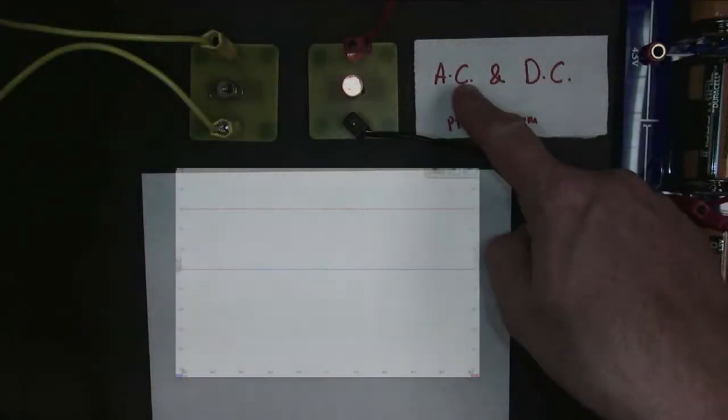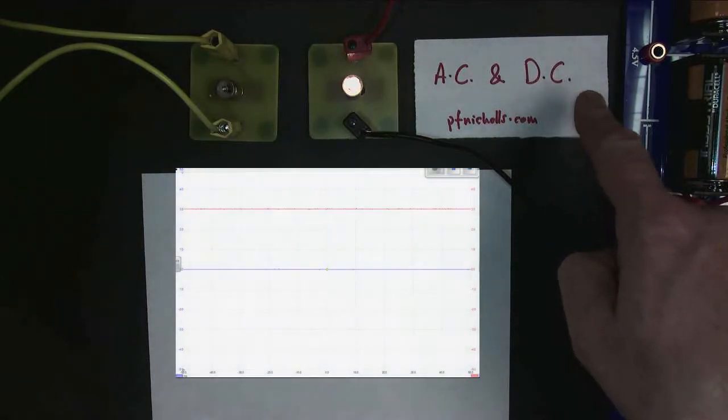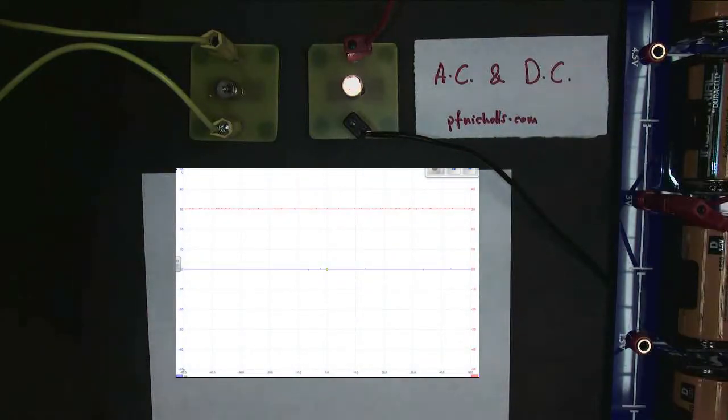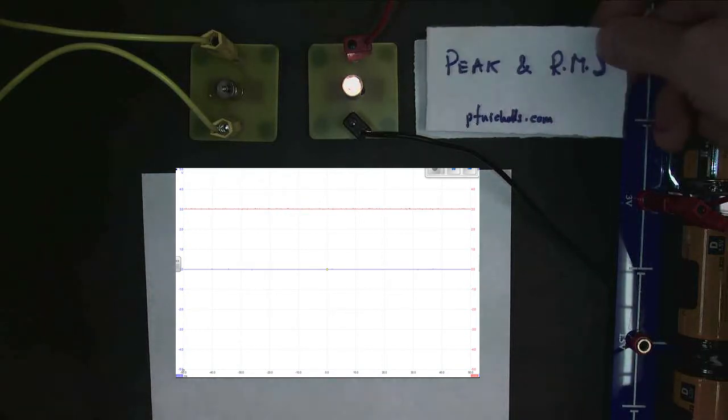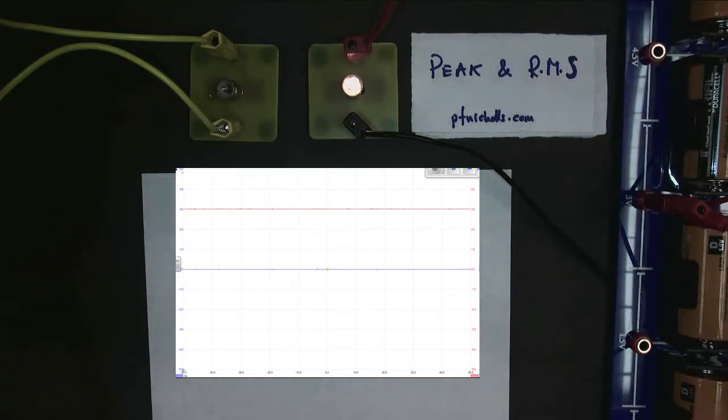This video is about AC and DC. On my oscilloscope, the red line represents the DC and the blue line represents the AC, which is currently off. I could call it peak and RMS. That would be a good other title.